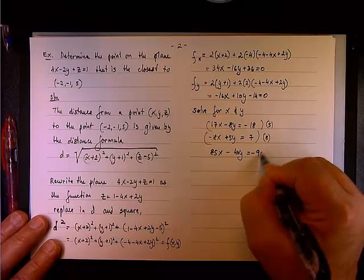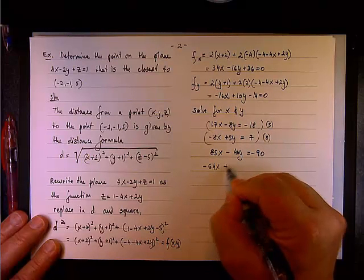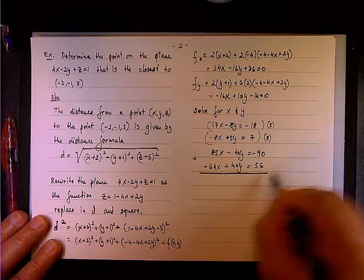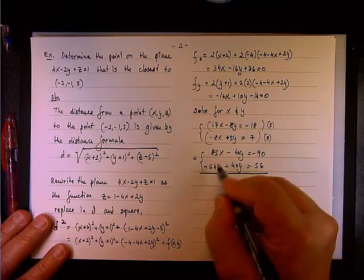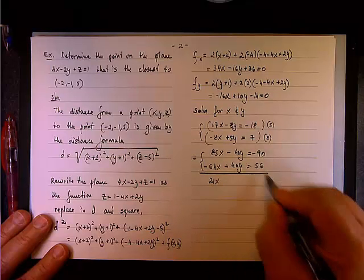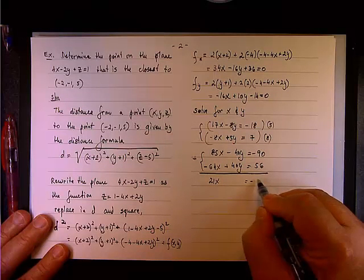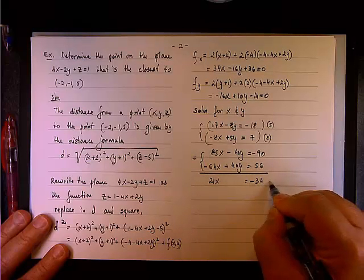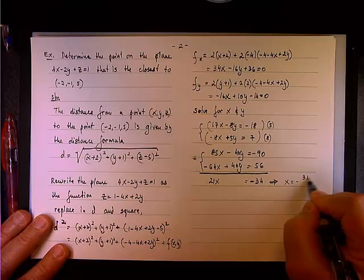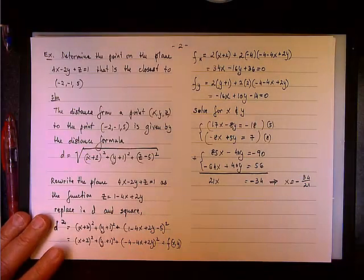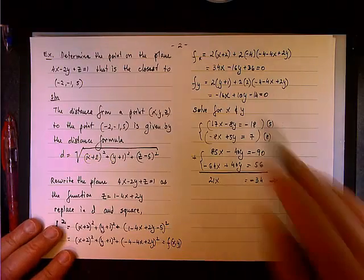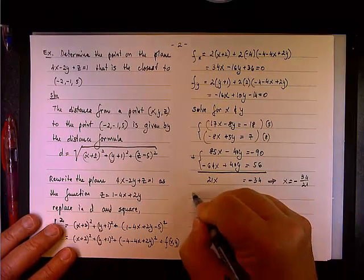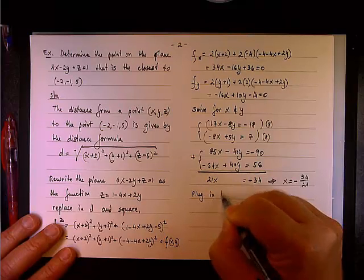We have 85x minus 40y equals negative 90, and negative 64x plus 40y equals 56. This gives us 21x equals negative 34, so x equals negative 34 over 21.